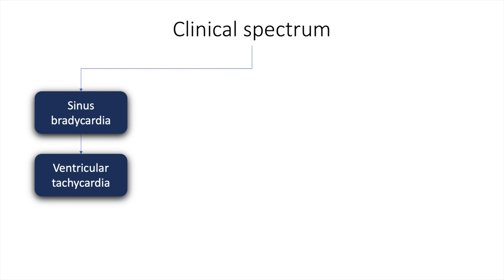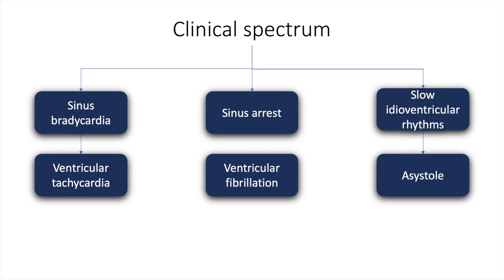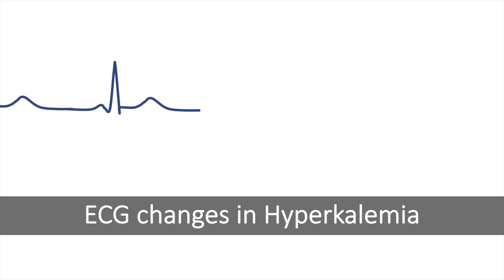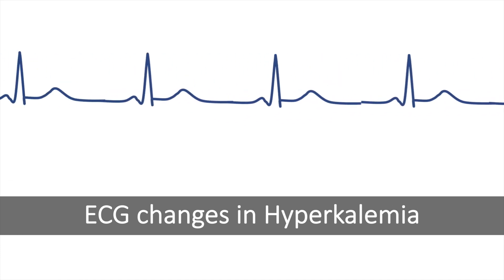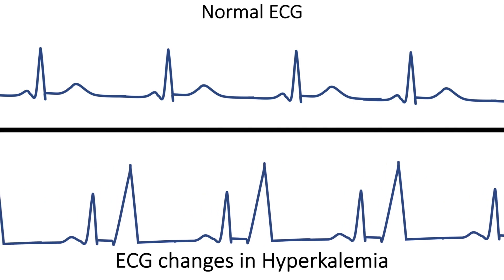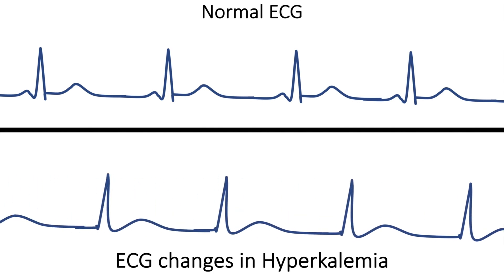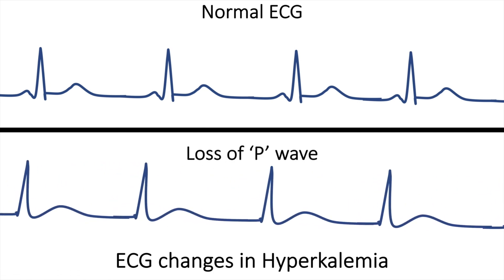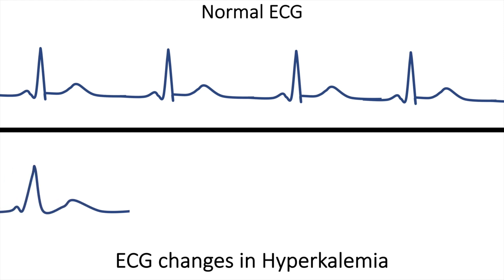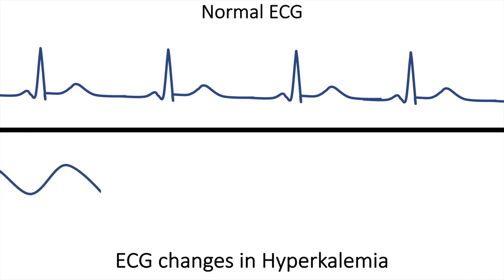The clinical spectrum of hyperkalemia ranges from sinus bradycardia to ventricular tachycardia. There can also be sinus arrest, ventricular fibrillation, and slow idioventricular rhythms resulting in asystole. The ECG changes in hyperkalemia are important — here we see a normal ECG trace for comparison. The first abnormality may be tall pointed T waves, followed by progressive loss of P wave, widening of the QRS complex, and finally the sine wave pattern.